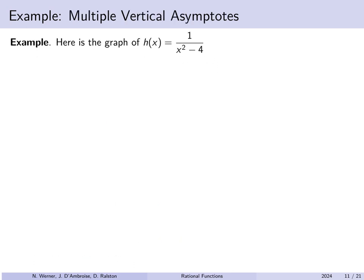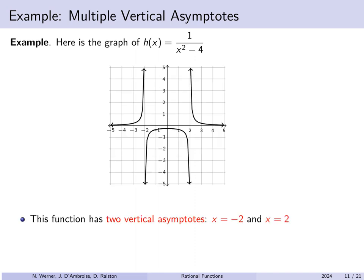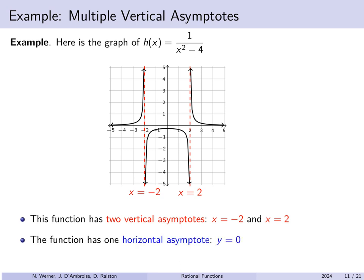Another example: here's the graph of h of x equals 1 over x squared minus 4. This function has two vertical asymptotes at x equals negative 2 and x equals 2 — the graph doesn't quite touch those lines. The function has a single horizontal asymptote at y equals 0, and the graph gets close as x moves left and right but doesn't actually touch it. There are no holes in this graph. But how do you find the horizontal and vertical asymptotes and how do you determine if the graph has any holes?